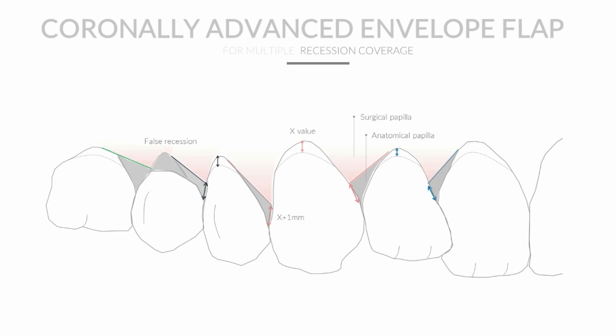When designing this recession, one should pay close attention to the shape of the surgical papilla being created, making sure it will be adequate for recession coverage once mobilized. The recession coverage is obtained by mobilizing the flap and suturing the surgical papilla coronally to the anatomical papilla. The papilla created mesially will rotate mesially and the papilla created distally will be rotated distally, mobilized coronally through the canine axis of rotation.